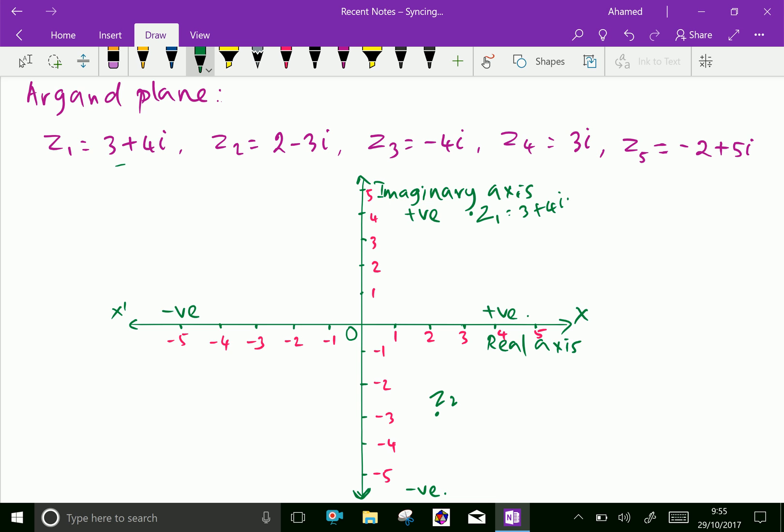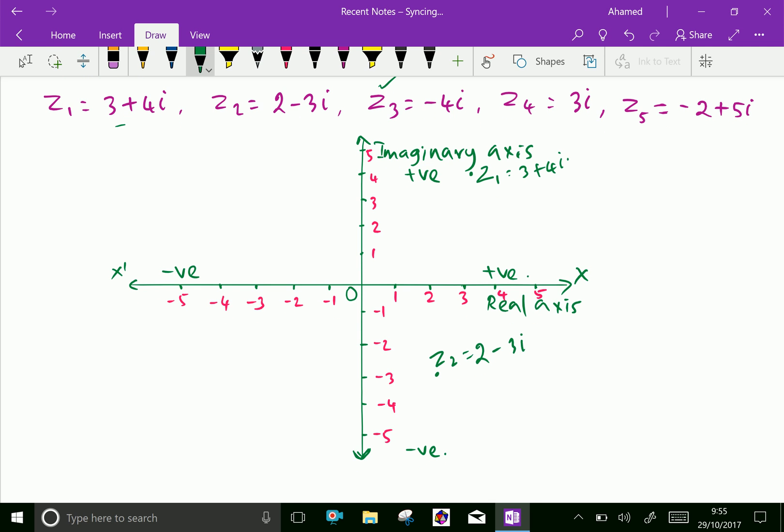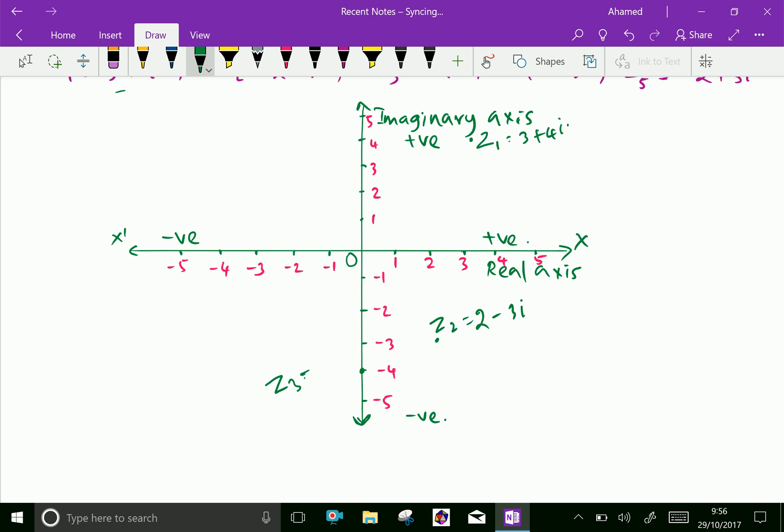Third one, z3 equals minus 4i. Only the imaginary part. Here this point is z3 equals minus 4i.